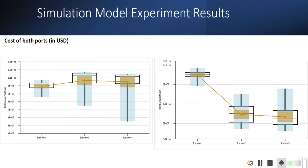Also the cost. The Rotterdam port cost is significantly much higher than the Hamburg port, and also for scenario one, two, and three. But for the Hamburg port cost for scenario two and three, it is significantly lesser.